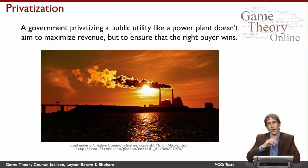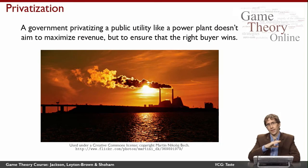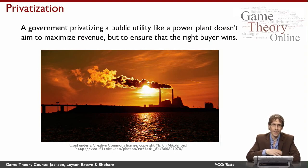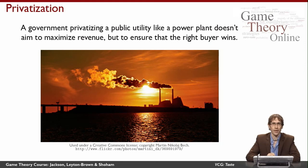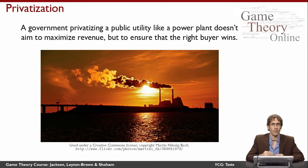Let's start with the simplest example where I'm going to allocate a single thing among a set of agents. Imagine a government that wants to privatize a public utility like a power plant. The government thinks this public utility could be more efficiently operated by somebody in the private sector. It typically wants to figure out which among a set of potential buyers values the utility the most, because that's the buyer that would most efficiently operate the utility afterwards. The problem is that if it just asked them, the buyers would lie — they would all claim very high values, and the government would probably not end up giving the power plant to the right company.